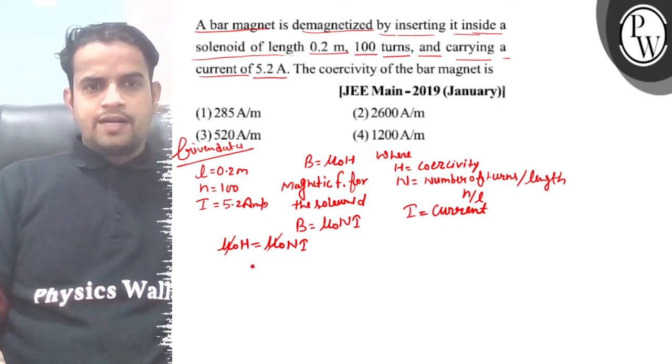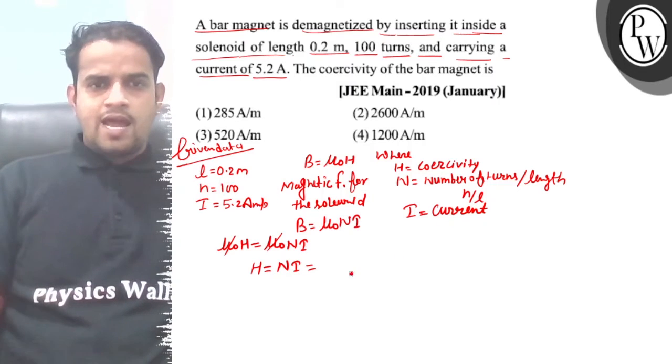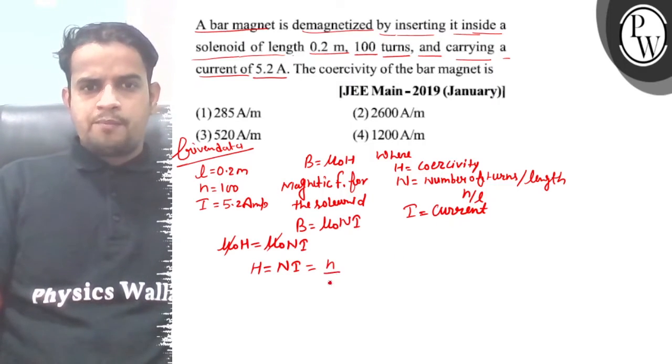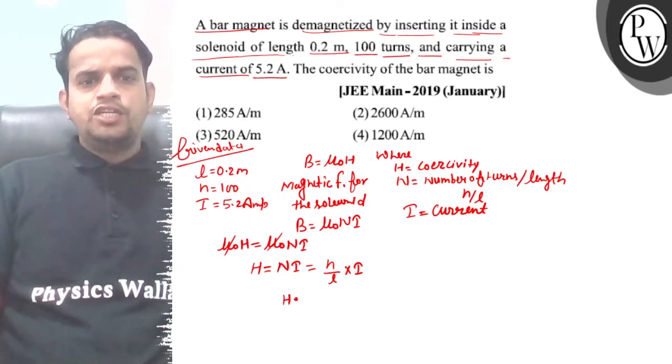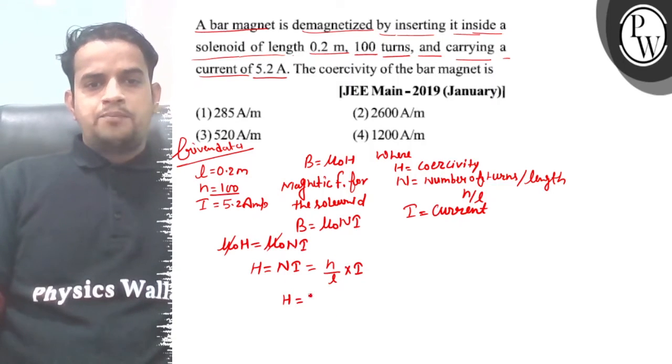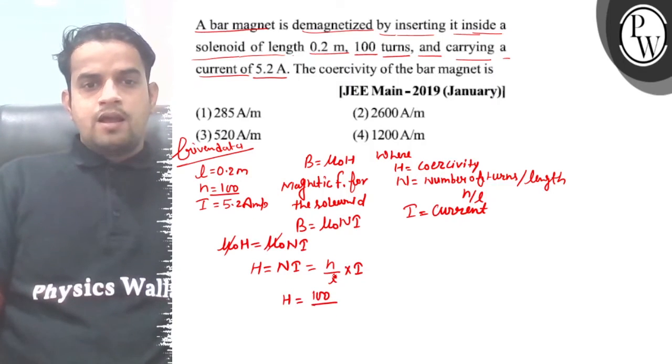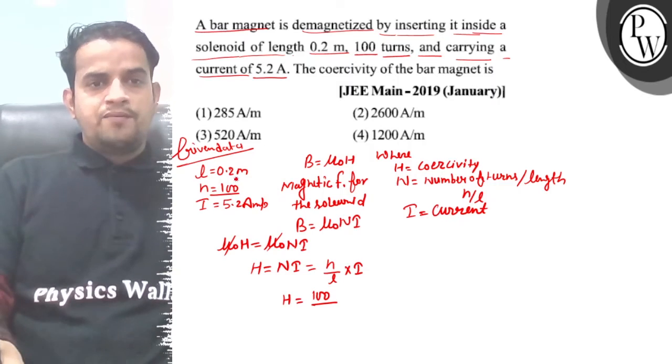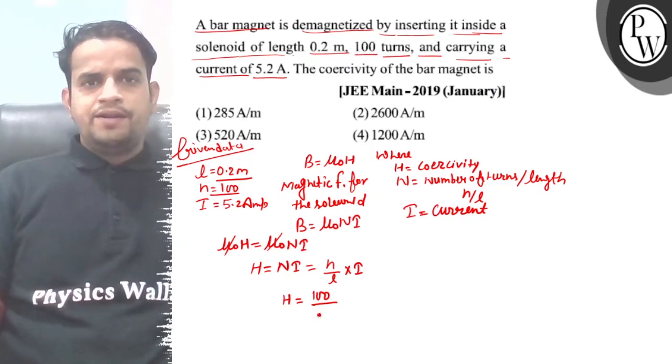So for the solenoid, n equals N/L, the number of turns per length.